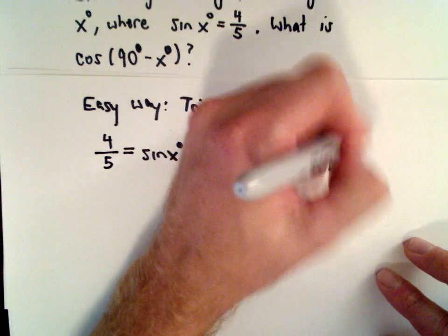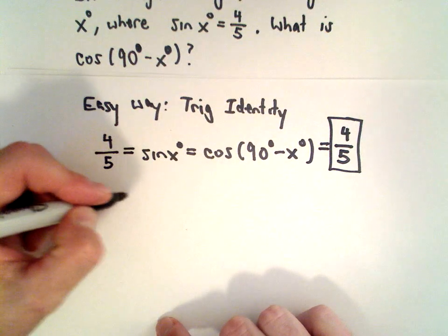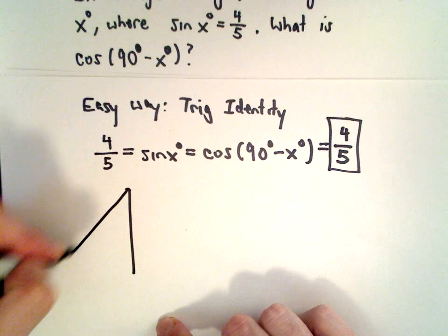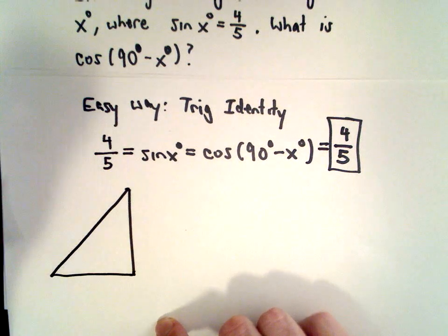So that's the answer. That's the easy way. Let's do it using a right triangle. Okay, so we're talking about degrees. I'm going to leave off the degrees.